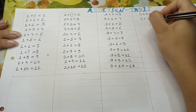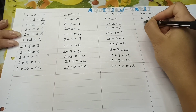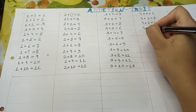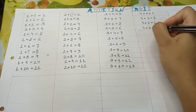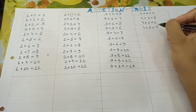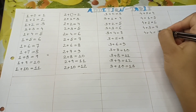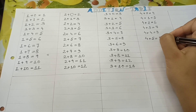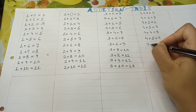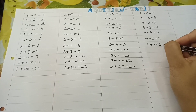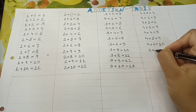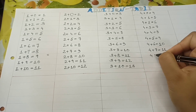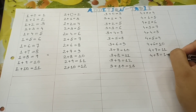4 plus 1 equal to 5. 4 plus 2 equal to 6. 4 plus 3 is equal to 7. 4 plus 4 equal to 8. 4 plus 5 is equal to 9. 4 plus 6 is equal to 10. 4 plus 7 is equal to 11. 4 plus 8 is equal to 12.